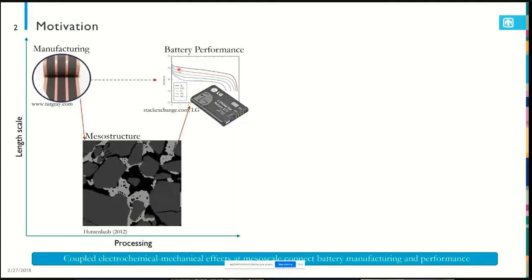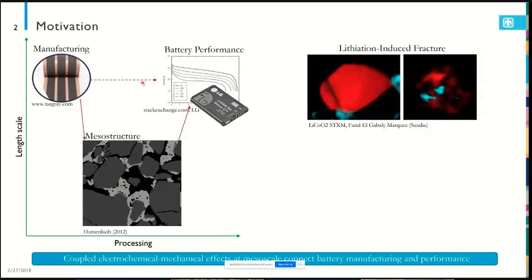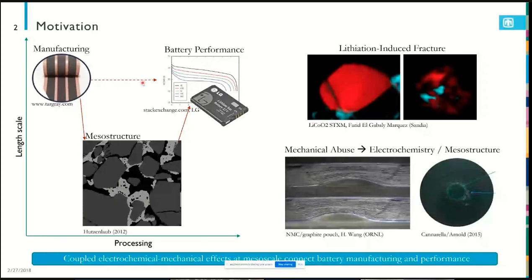When you change manufacturing parameters, you're really changing things like the morphology of the conductive binder domain phase — the CBD phase — or you're cracking particles, or making other changes to the mesoscale that really influence battery performance. We've been focused on understanding those connections for the past seven or eight years. At Sandia, we're really interested in safety and degradation phenomena, trying to make sure batteries can be as long-lasting and safe as possible, especially in mechanical environments.